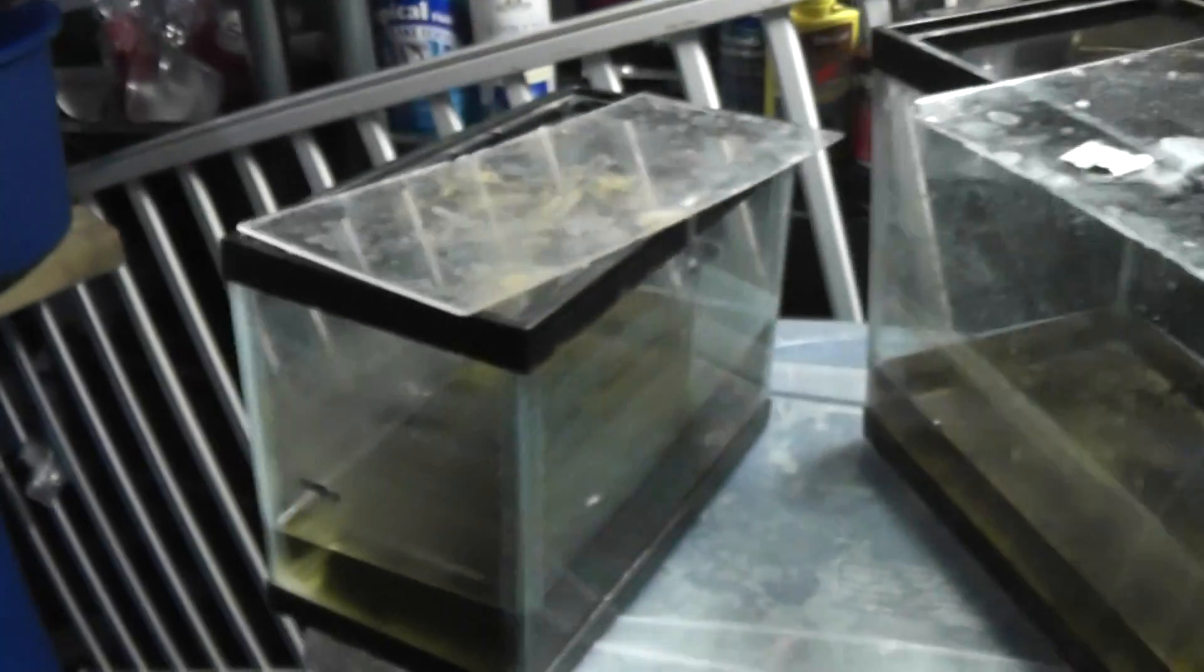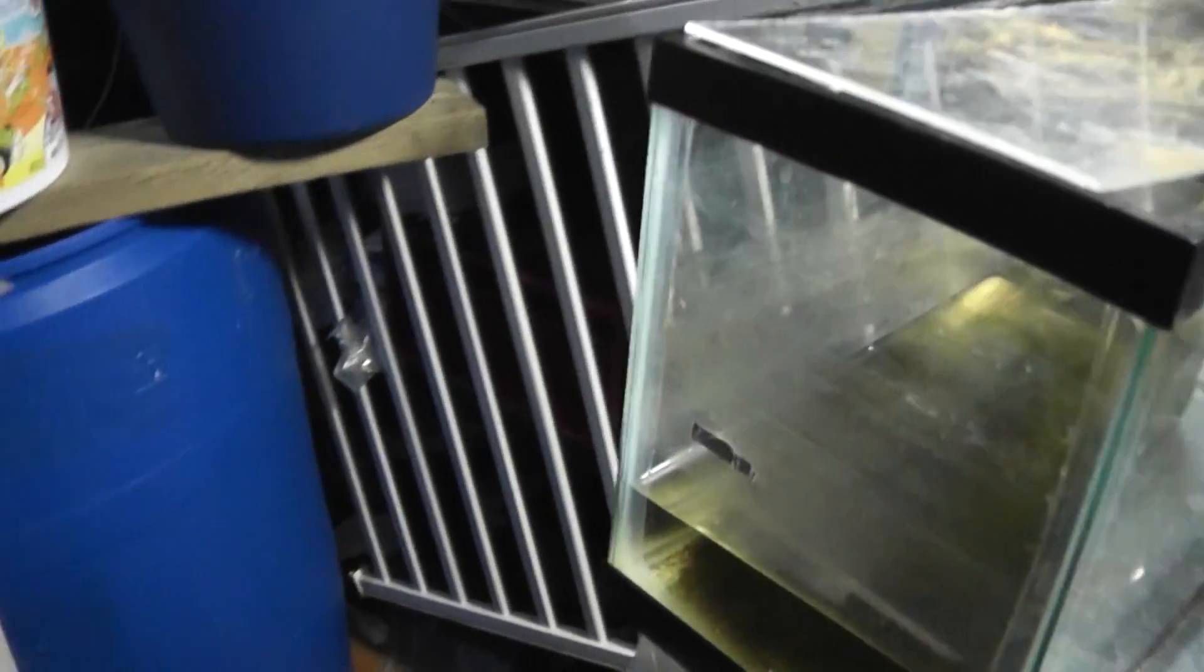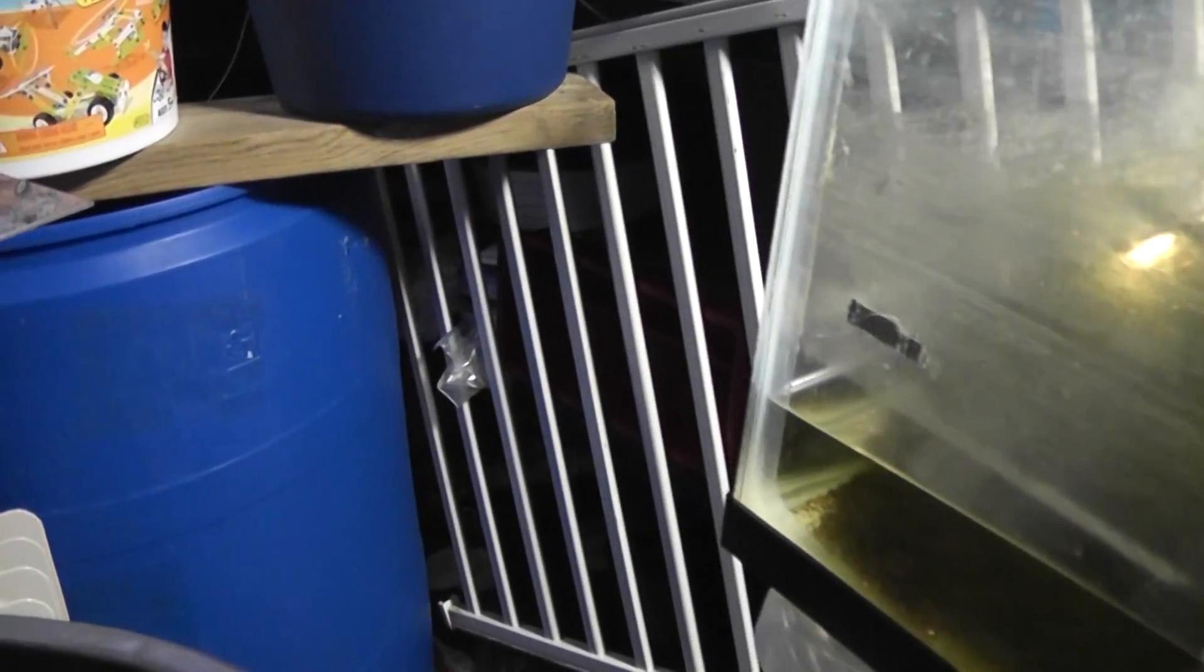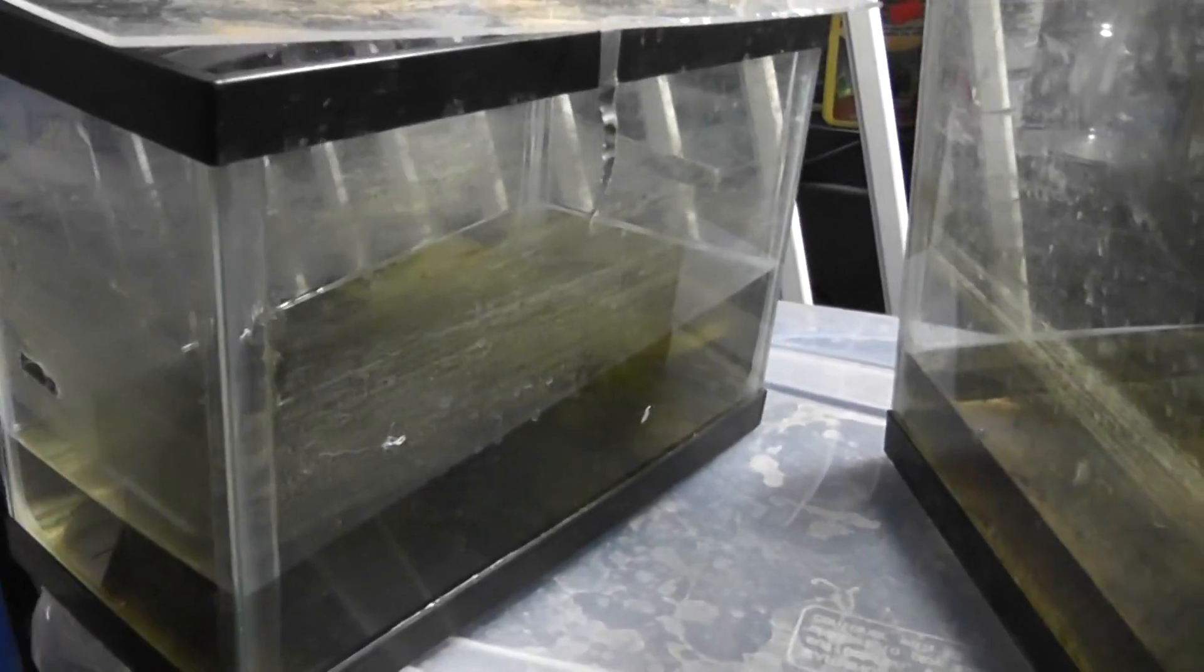Basically that's it. That's a preview of just the different containers. If I had to choose one or just talk about which one I think is the best, I would say this one here, the smaller rectangular one, just because it forces those two fish to be closer to each other.